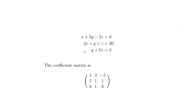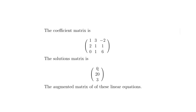The zero here is because we've got zero X's in that equation. So for example the top row is 1, 3, -2; the second row is 2, 2, 1; and then we have 0, 1, 6. That's how they all end up in the coefficient matrix.